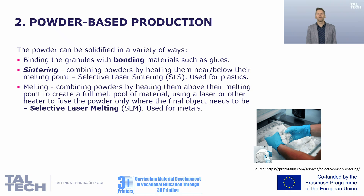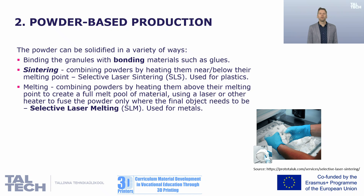Now let's move on and talk about powder-based systems. If the raw material is in powder form, there are basically three options to solidify the powder into a solid 3D object. One way is to use gluing and bind the tiny powder particles together in the areas where we need to build the part. The second option is sintering, which means heating the powder particles near or just below their melting point so the particles bond together, though it is not fully solid. This is usually used for plastics.